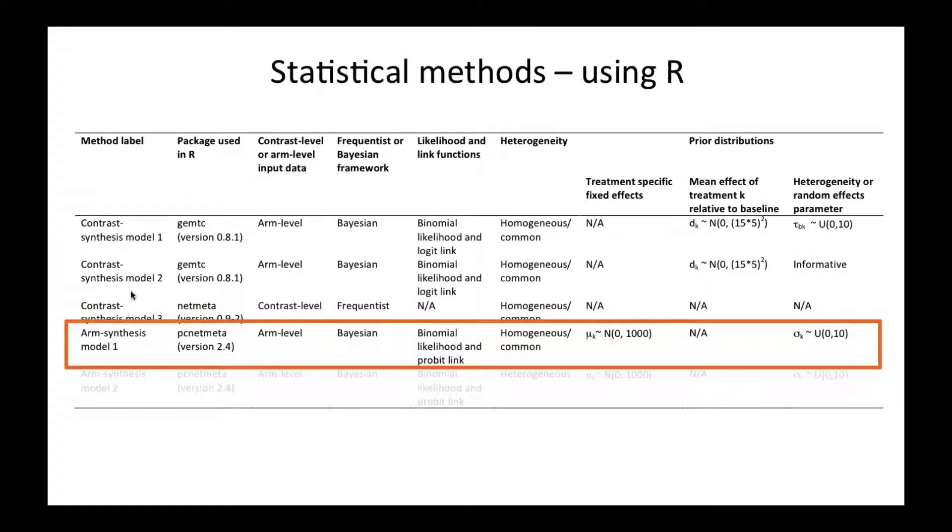The final model, which we've called arm synthesis model, is this arm-based likelihood model where we've assumed homogeneity of the variance and the random effects, and we've also assumed that the off-diagonal elements of that correlation matrix are all equal.